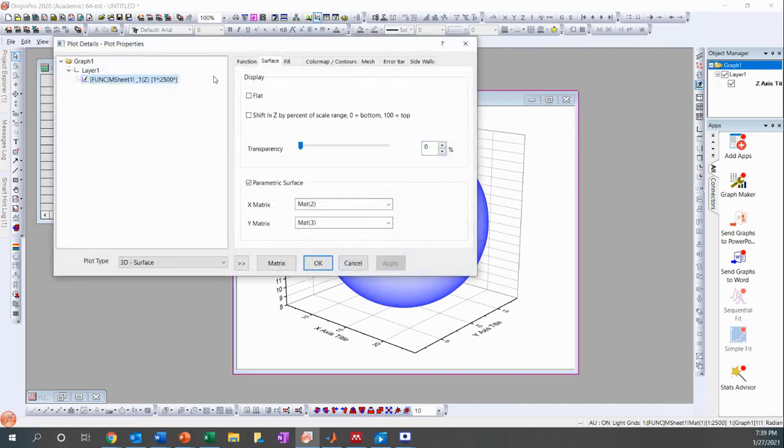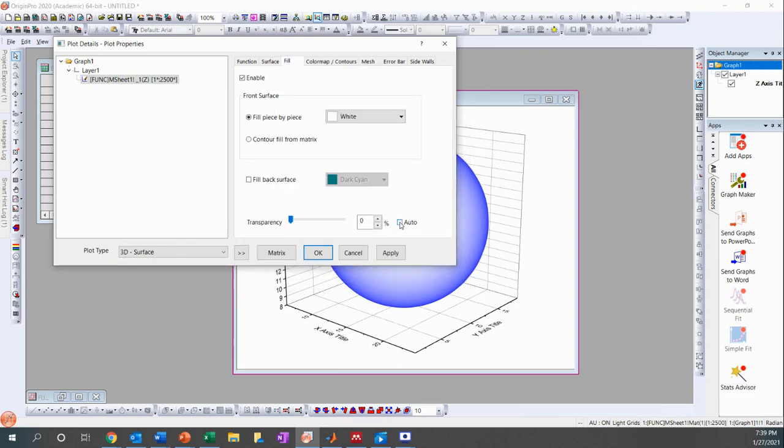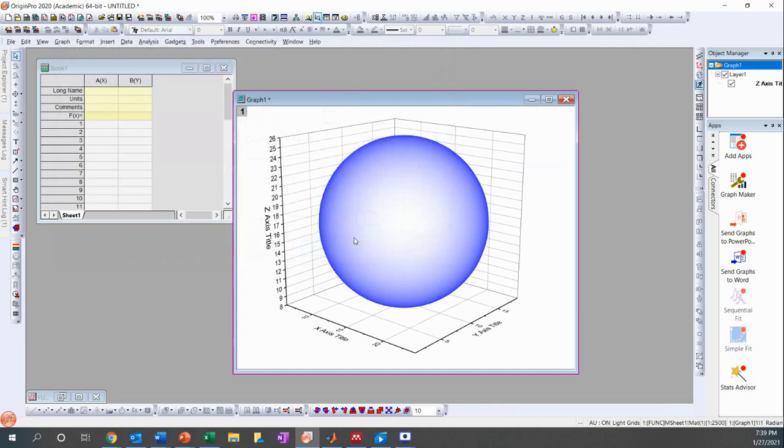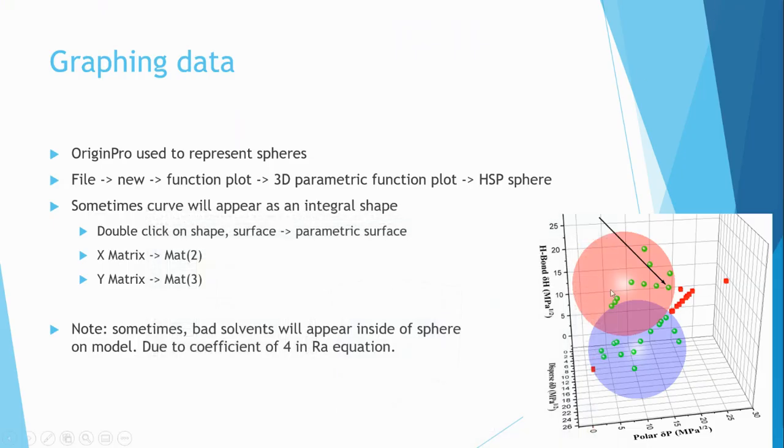And so sometimes, especially when I'm plotting good solvents and bad solvents around the sphere, I find that it's best to make the sphere transparent. So what I'll do is I'll disable the mesh function. And then instead of auto transparency, I will set it to about 80 to 90 percent. And then we can see here that it's more transparent, so you can actually see through it. So if there was a good solvent inside of the sphere, we would be able to see that in this graph.